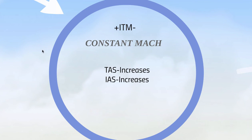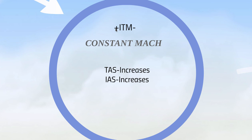Now let's talk about a descent. Coming down, you're going from high to low — positive to negative — and you use ITM again. If you hold a constant Mach and want to find out what happens to true airspeed or indicated airspeed: in a descent, the positive is on the left and the negative is on the right. Everything to the left of M is increasing, so true airspeed increases and indicated airspeed increases when holding a constant Mach in a descent.